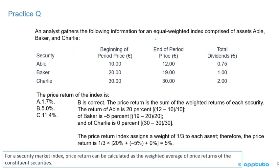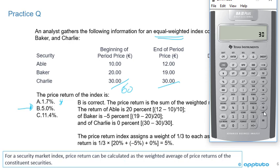This is an equal-weighted index, not a price-weighted index. If you didn't read carefully, you might sum beginning prices (10 + 20 + 30 = 60) and ending prices (12 + 19 + 30 = 61), and calculate 61/60 − 1 × 100, arriving at answer A, 1.7%. But A is not correct, because this is an equal-weighted index — you need to read the question very carefully.